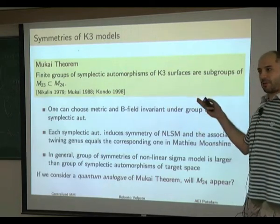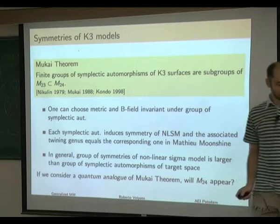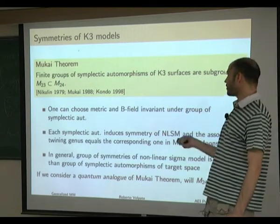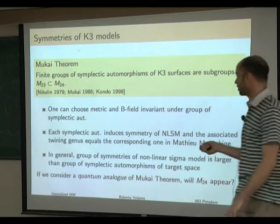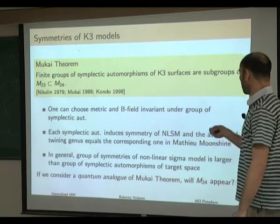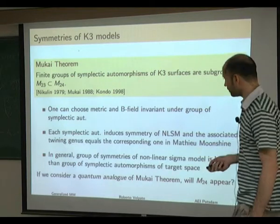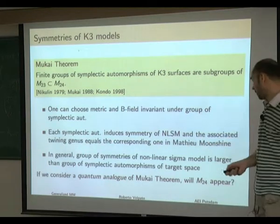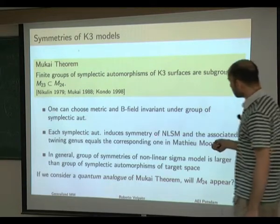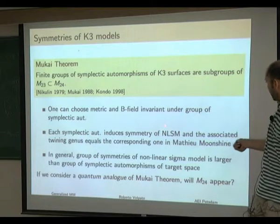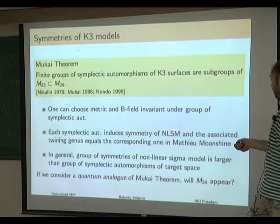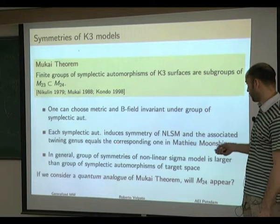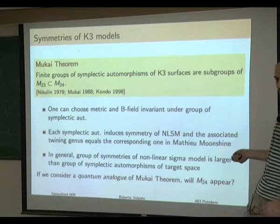This is about the geometry of K3. How is this related to nonlinear sigma models? If you have a complex surface with a group of symplectic automorphisms, one can always choose a metric and B-field invariant under this group. This means each symplectic automorphism induces a symmetry on the corresponding nonlinear sigma model. One can compute the twining genus with respect to these symmetries, and it turns out to be exactly equal to the corresponding one in the Mathieu Moonshine case.